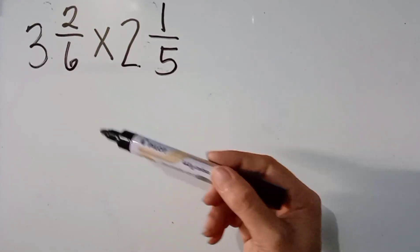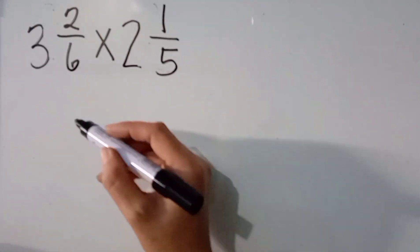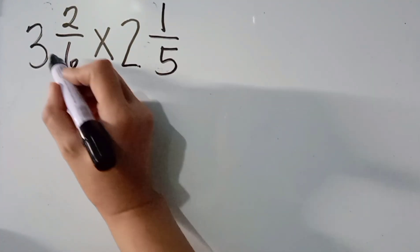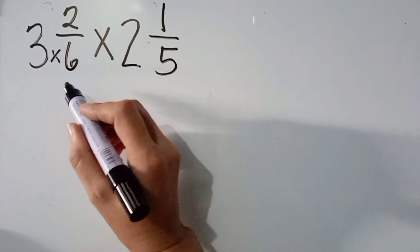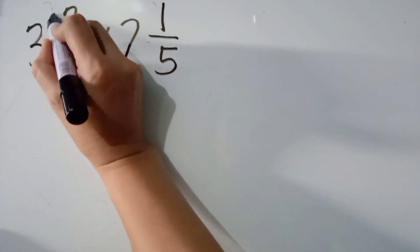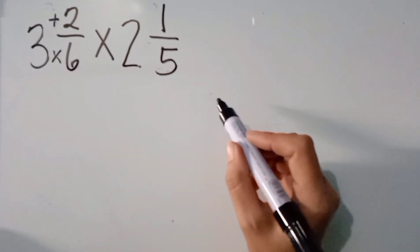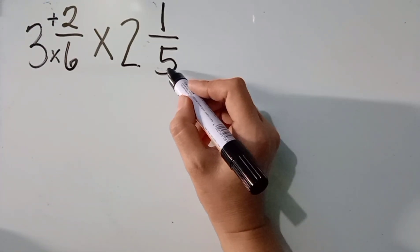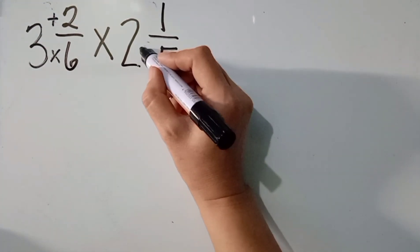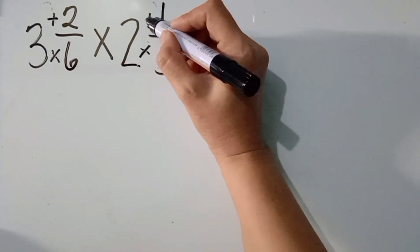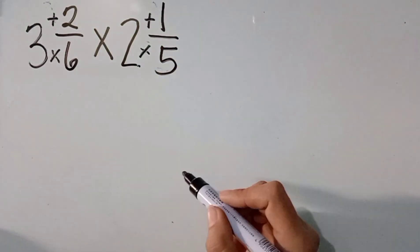So, how do we do that? We are going to multiply the denominator papunta doon sa kanyang whole number. And then, yung sagot, i-add naman natin doon sa numerator. So, ganun din po dito. Itong 5 na ito na denominator, i-multiply natin doon sa whole number na 2, and then the answer will be added to the numerator.